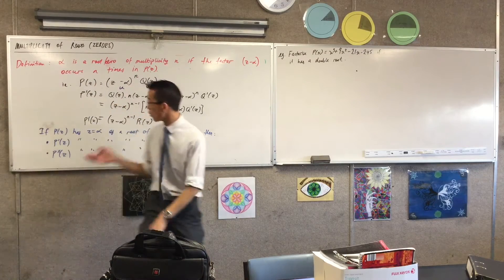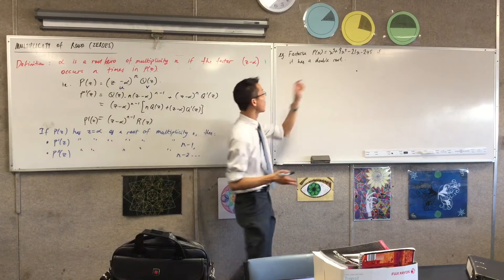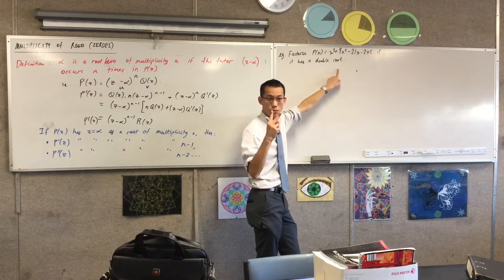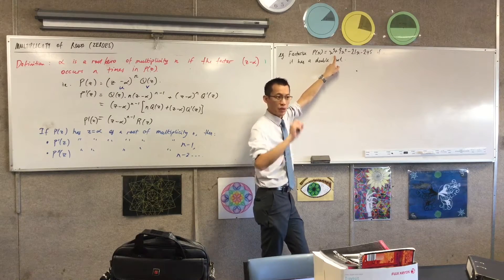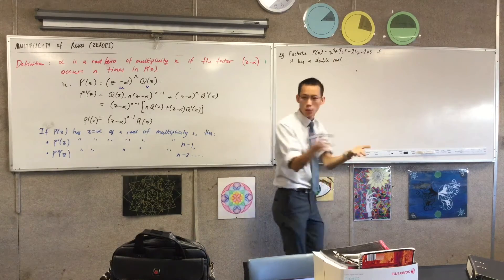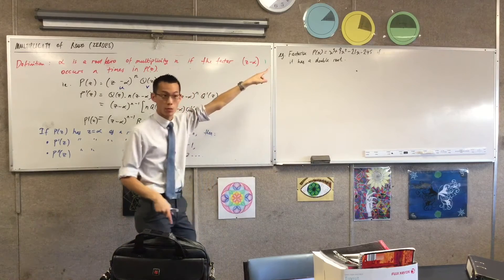I want to think to what we know about the multiplicity of roots. I have a root of multiplicity 2. That means that the derivative is going to have a root of multiplicity 1 at the same place, whatever that happens to be, wherever that double root is.